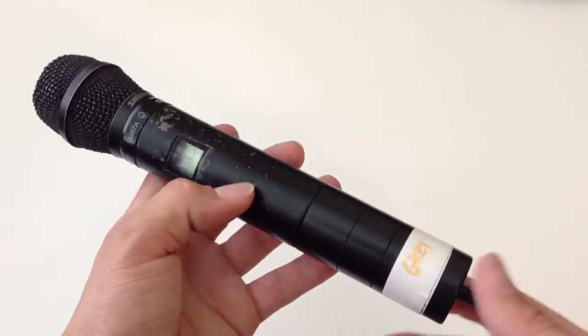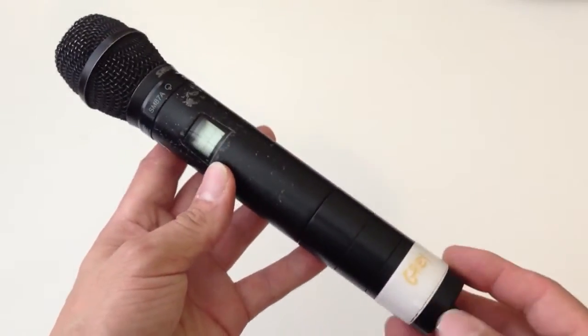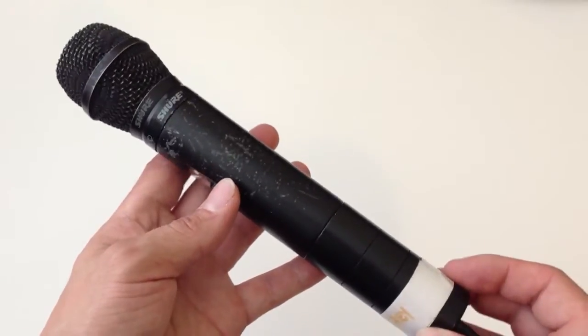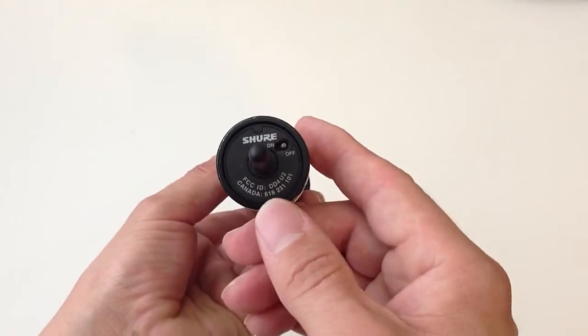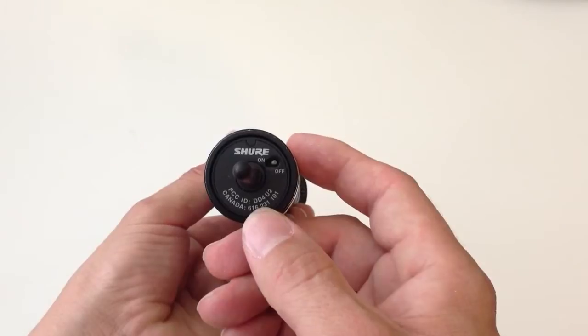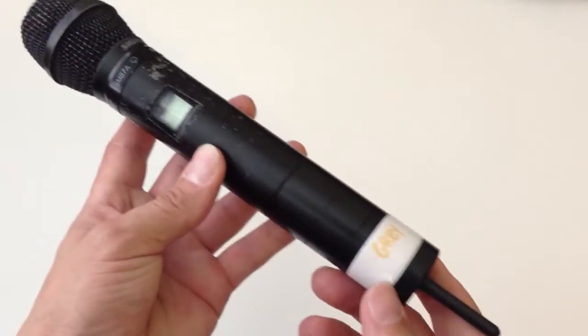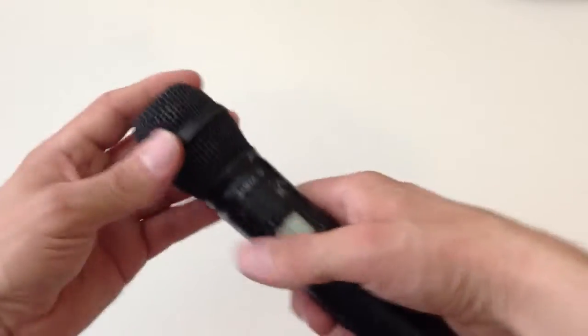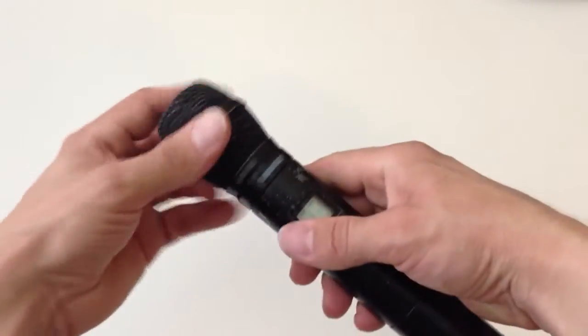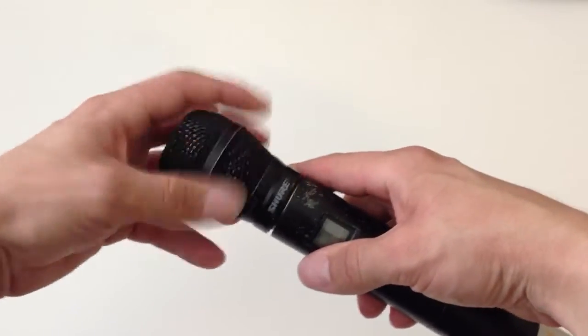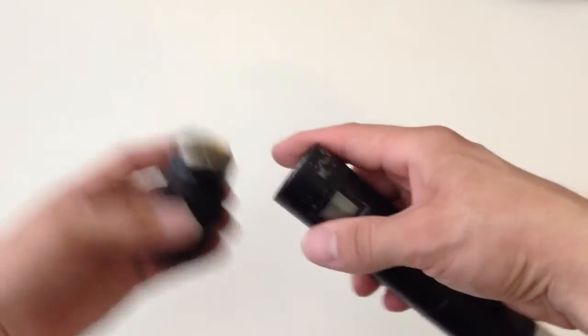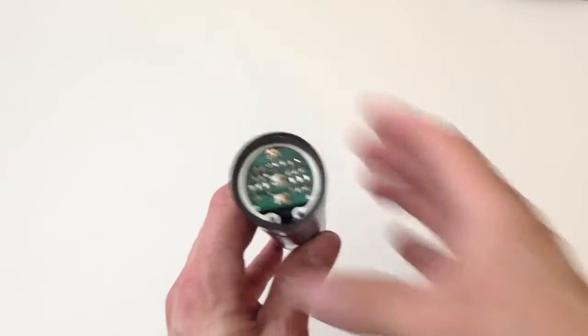Alright, this is a video of how to take apart a Shure wireless microphone from the UHF series. This model is the DD-4U2. First off, we have to unscrew the capsule like so, and we will see some electronics inside here.